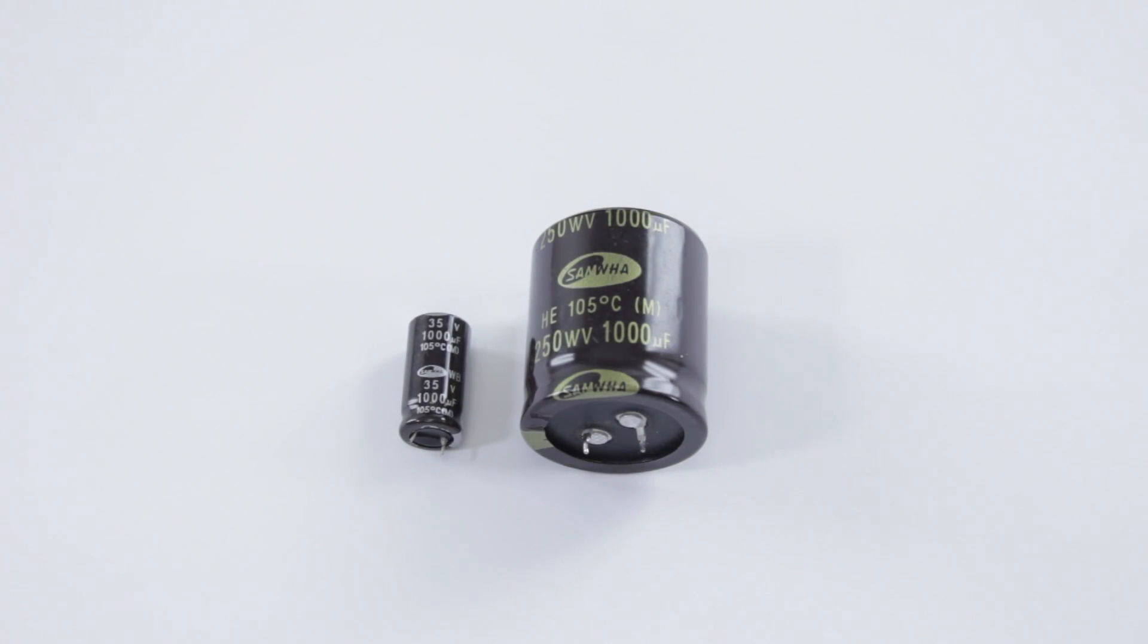Capacitors were originally known as condensers, so if you hear some old timers talk about condensers, you know what it is. Basically they're used to store a charge. They're able to get rid of that charge very quickly, unlike a battery which discharges slowly. These can do it almost instantly.